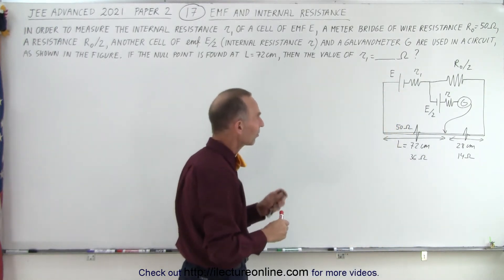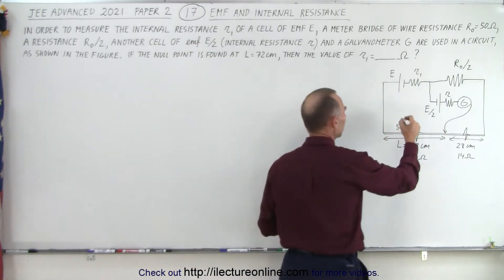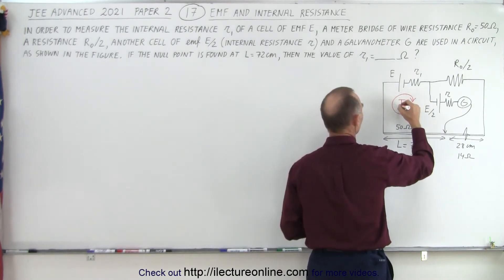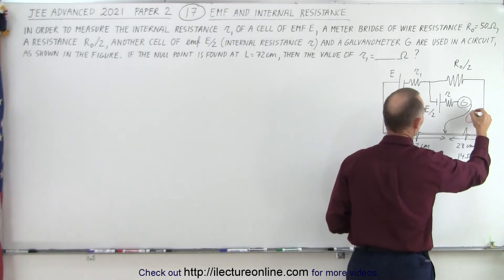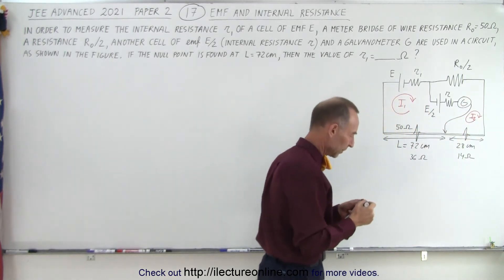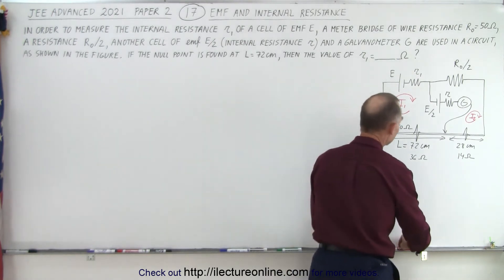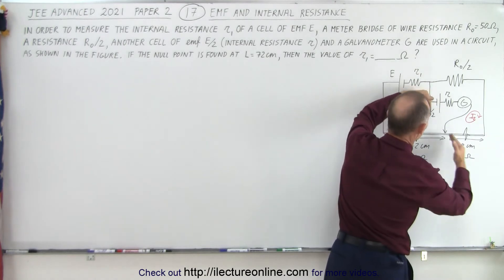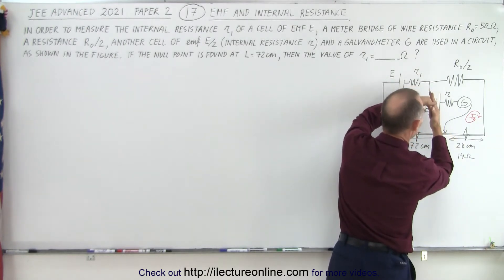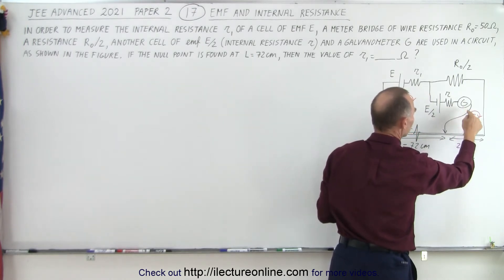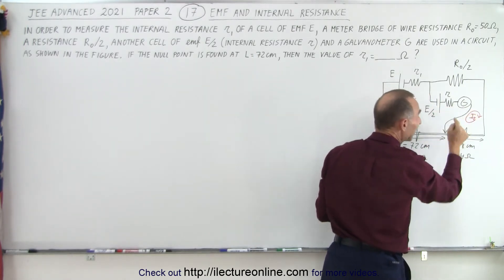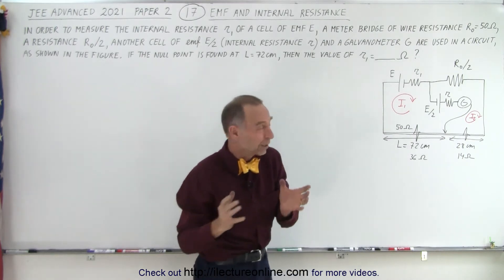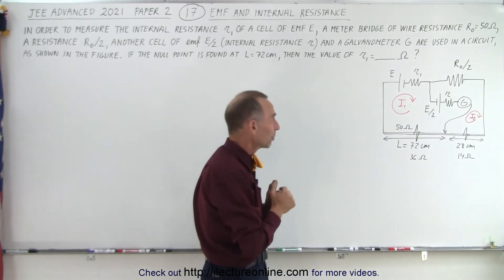The next thing to realize is that we're going to have a current flow in the first loop, let's call that I1, and a current flow in the second loop, let's call that I2, in a clockwise direction. Notice that I1 will go this way through this part of the circuit and I2 will go in the opposite direction. When they talk about the null point, they're saying that the galvanometer will show zero current at that point, I1 will equal I2, and that was the real key of understanding what the problem is asking for.